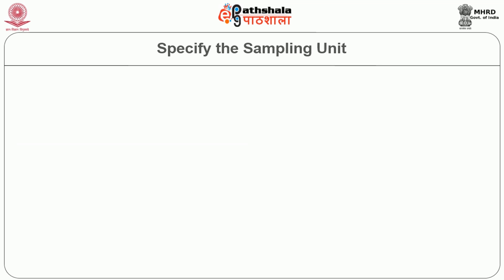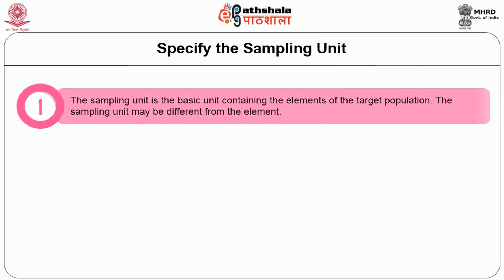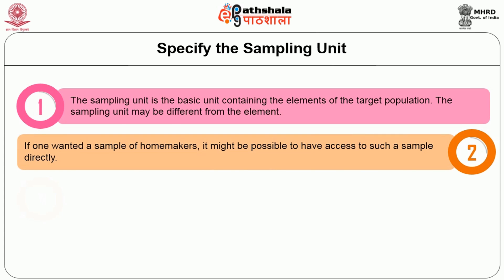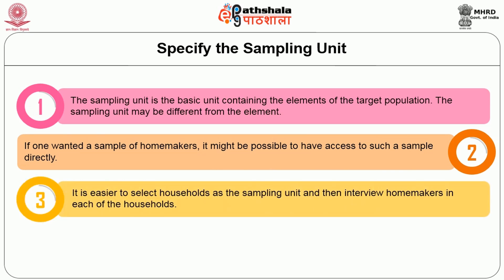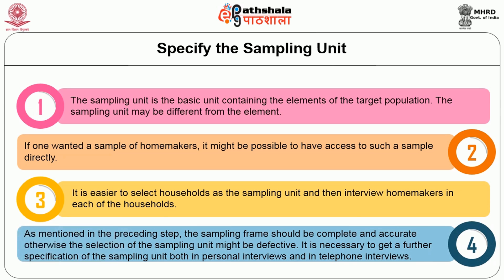The third step is to specify the sampling unit. The sampling unit is the basic unit containing the elements of the target population and may be different from the element itself. For example, if one wanted a sample of homemakers, it might be possible to access such a sample directly; however, it is easier to select households as the sampling unit and then interview homemakers in each household. The sampling frame should be complete and accurate; otherwise, the selection of the sampling unit might be defective.